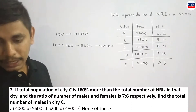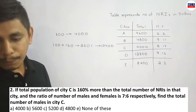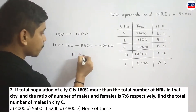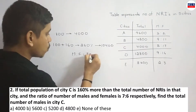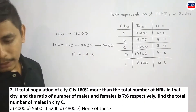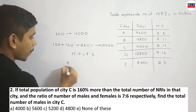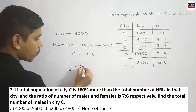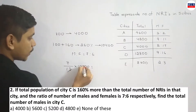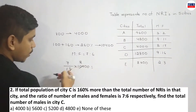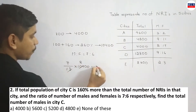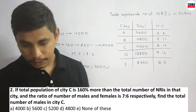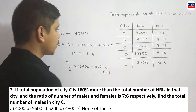Now, to find the total number of males in city C: male-to-female ratio is 7 is to 6, so 7 parts out of total 13 parts, multiplied by total population 10,400. 13 into 8 times gives 10,400 divided by 13 = 800; 7 times 800 = 5,600. So 5,600 is your answer. Option B is your answer.